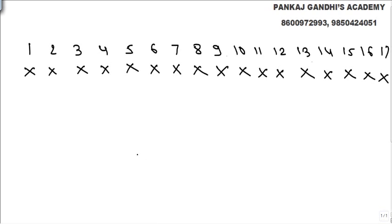The question given is: there are bulbs numbered 1, 2, 3, 4, up to 100. We can write only up to 17, that's what we have written, but we will be able to scale up the logic.